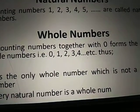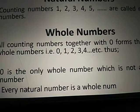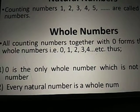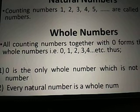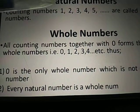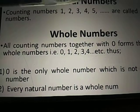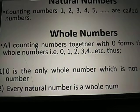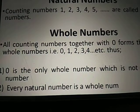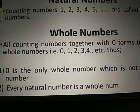First comes natural numbers. What are natural numbers? Counting numbers are nothing but natural numbers, such as 1, 2, 3, 4, 5 and so on till infinity are called natural numbers.